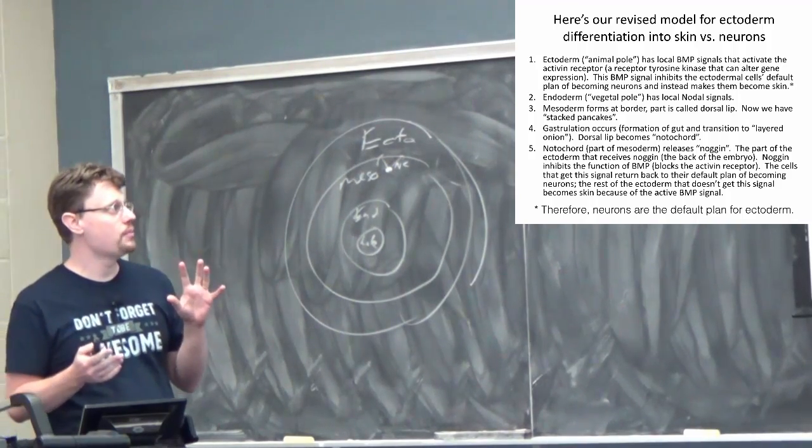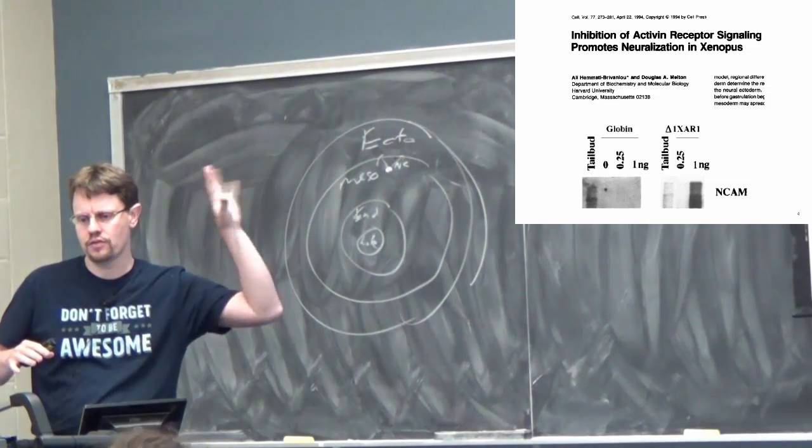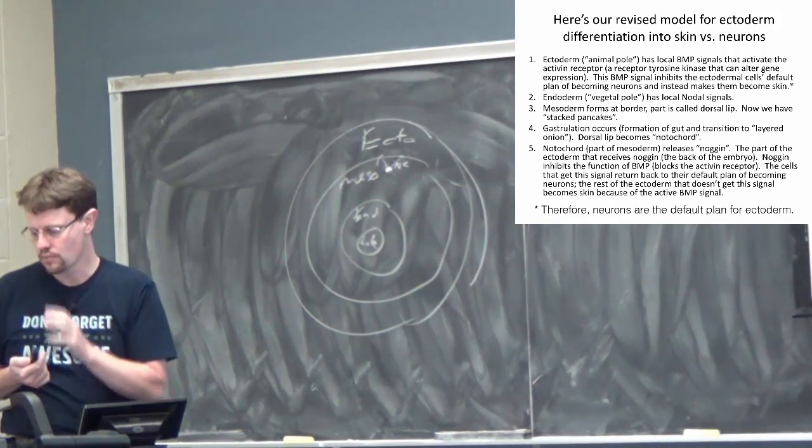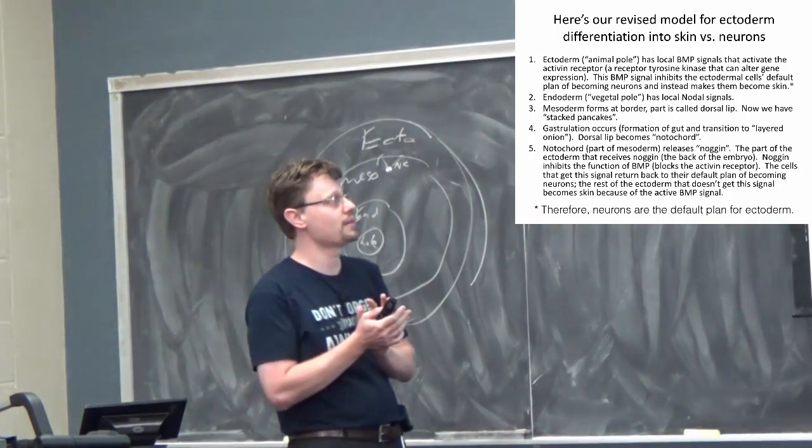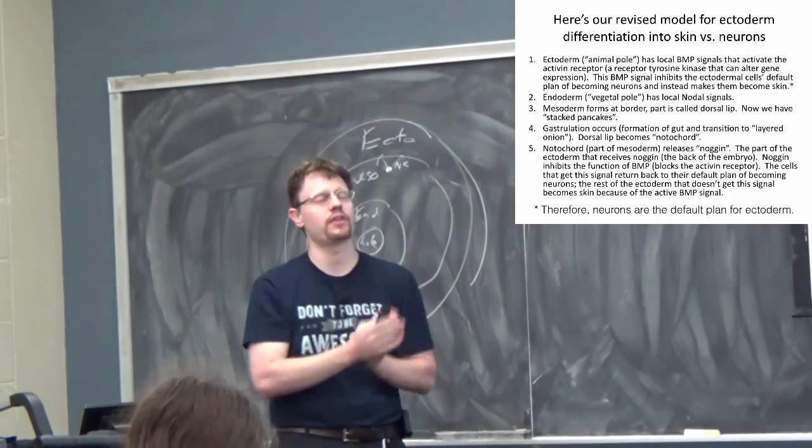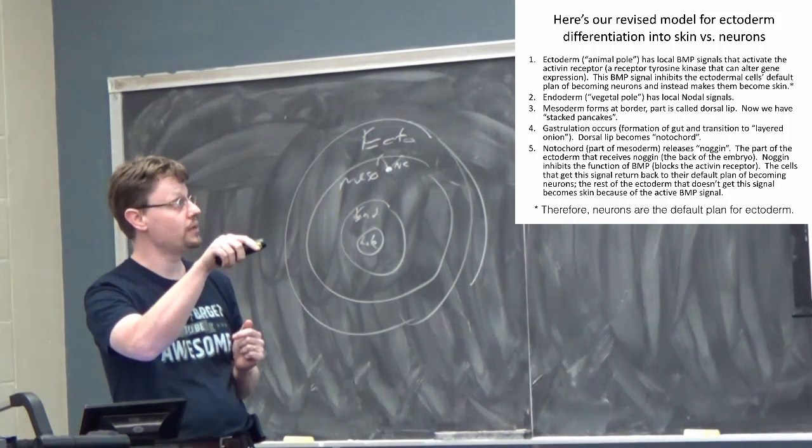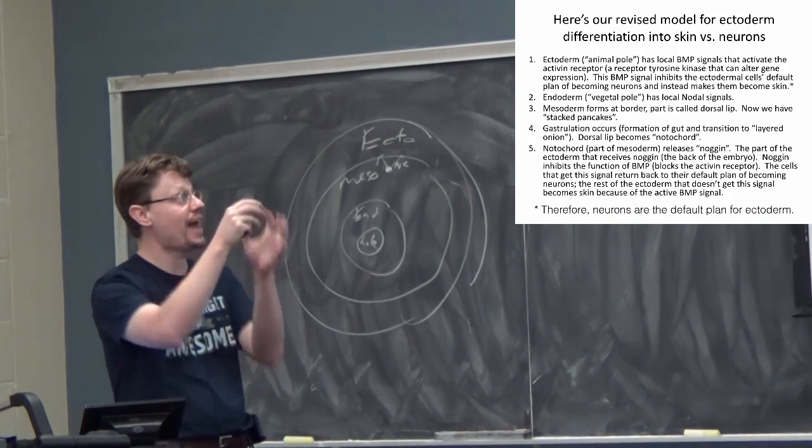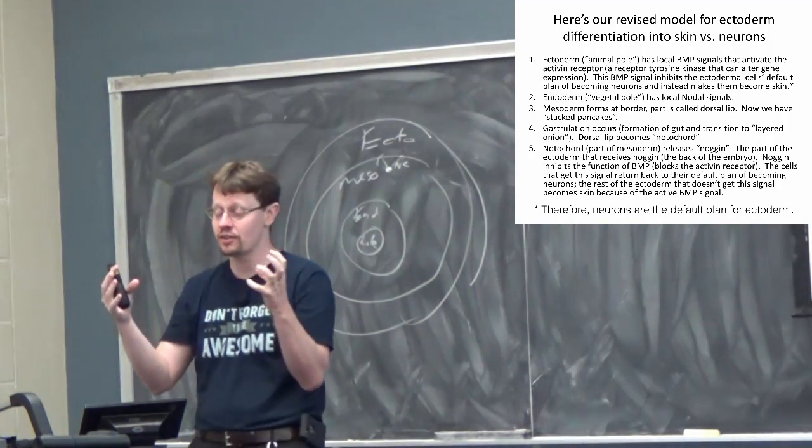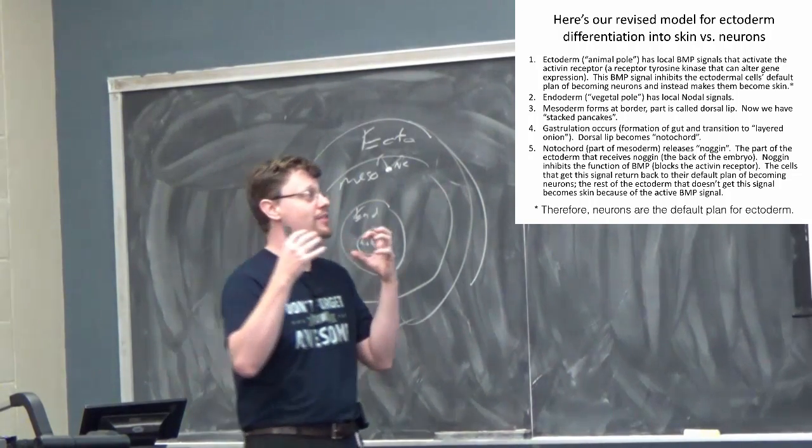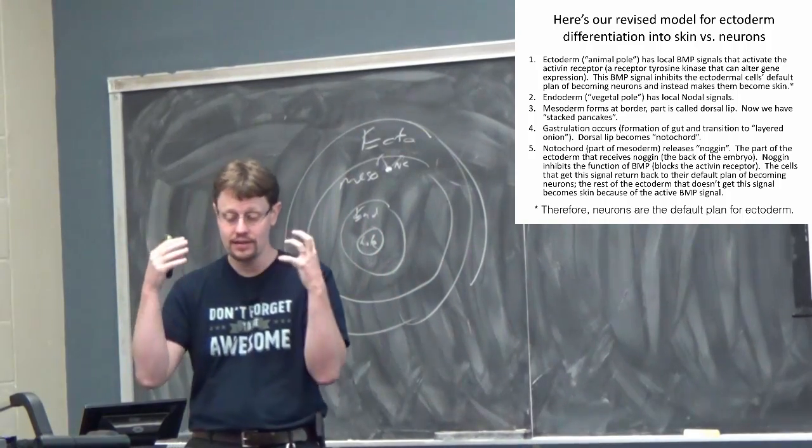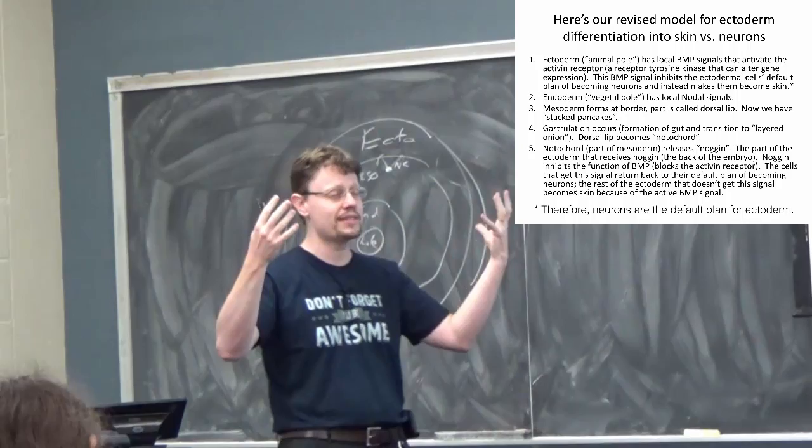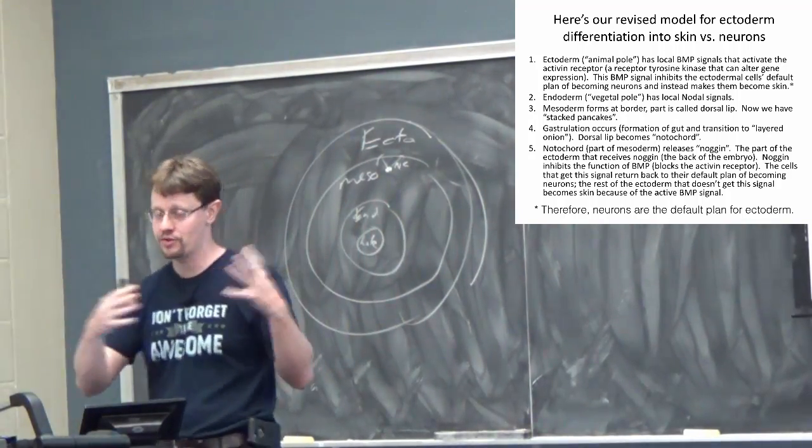And so in the discussions, what questions do people have leftover about these papers and these studies and the methods and ideas there? Okay. And so in the discussions, you probably came up with something along these lines. Very minor modification to what we had from Wednesday. In the ectoderm at the animal pole, there's this local BMP signal that activates the activin receptor. The new thing that we're adding here is that this BMP signal inhibits the ectoderm cell's default plan of becoming neurons. So it's this peer pressure signal and they're all peer pressuring each other to not be brain.